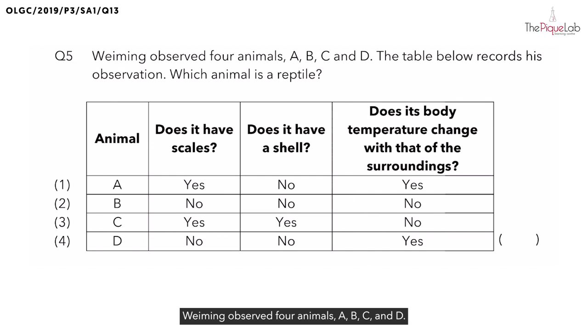Question five: Weiming observed four animals A, B, C, and D. The table below records his observation. And now they want us to find out which animal is a reptile. So to answer this question, let's take a look at the table.